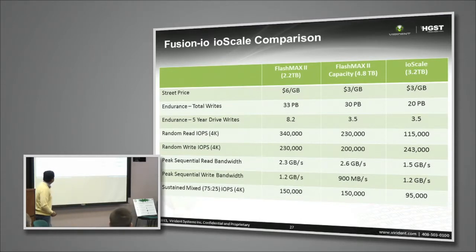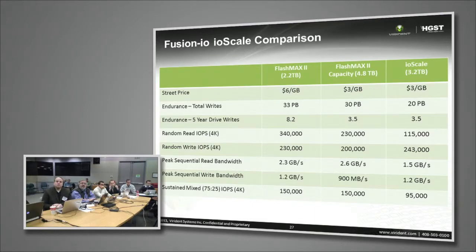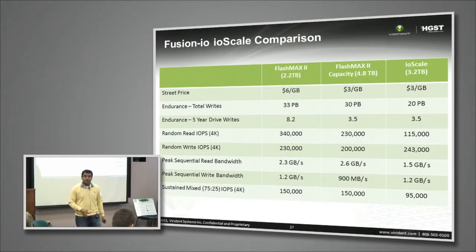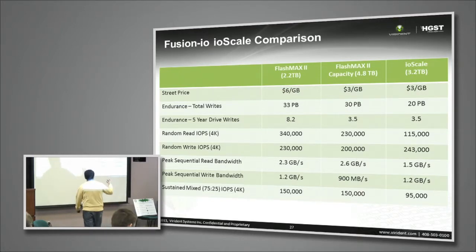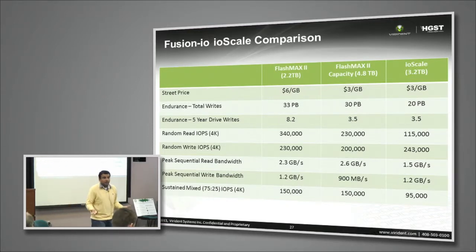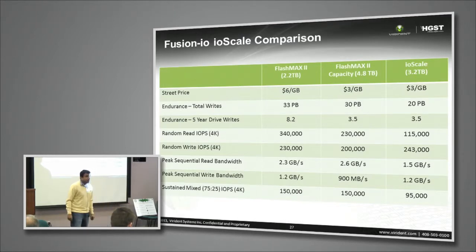The random writes may look better for Fusion IO, but look at the sustained mixed performance — there is no real application that only does writes and not reads. Real-class applications are mixed workloads. At 75-25 IO mix, we show 120K versus their 100K — 1.5 times better. Capacity is higher as well, and the dollars-per-gig is equal. So why would you not choose FlashMax over Fusion IO? No reason. We have diffused the gas of Fusion IO.